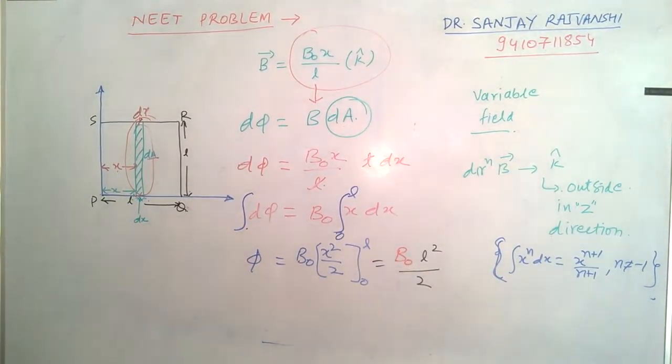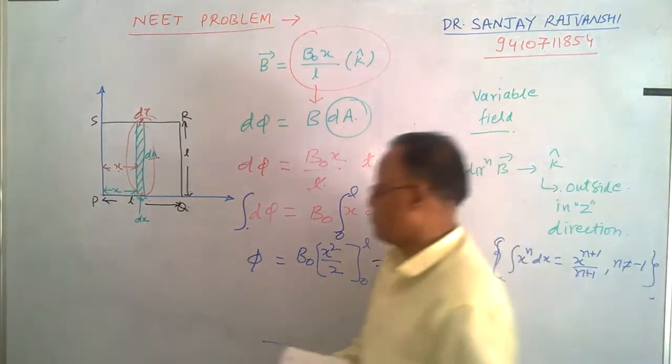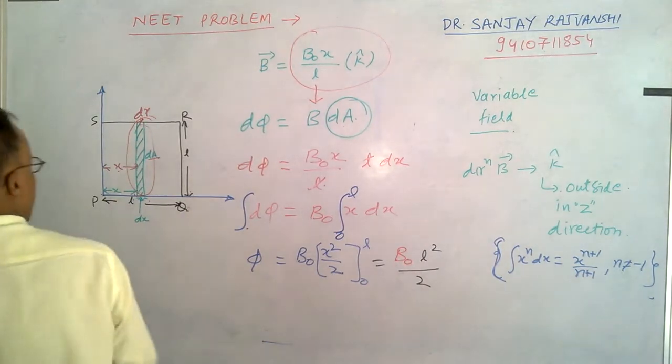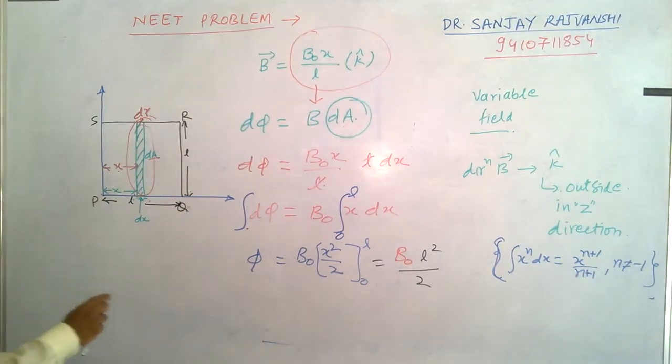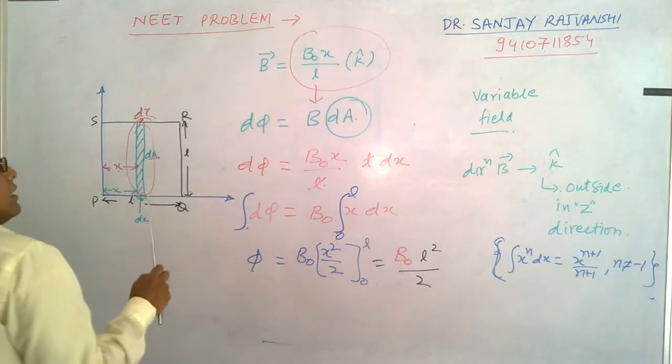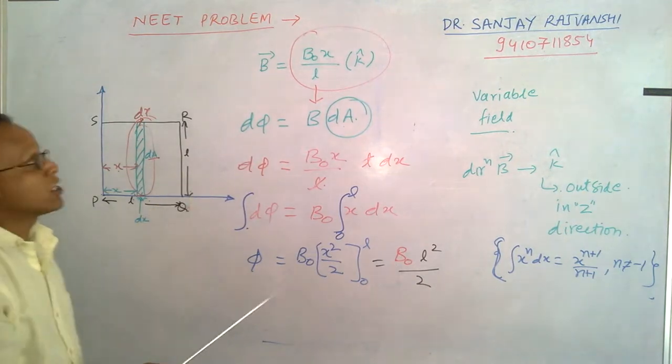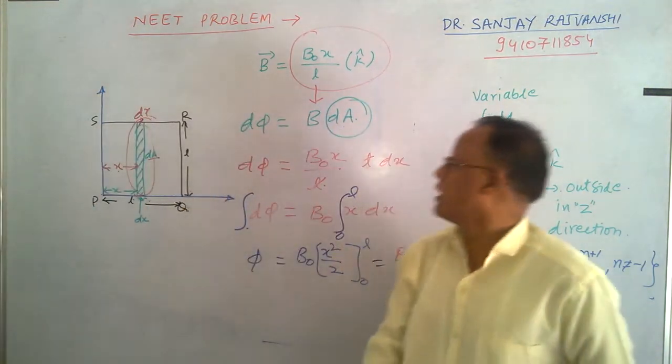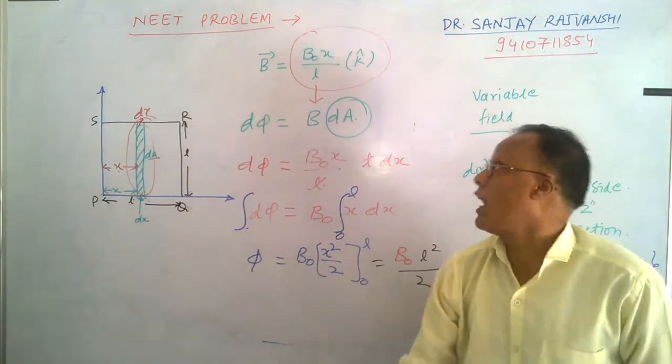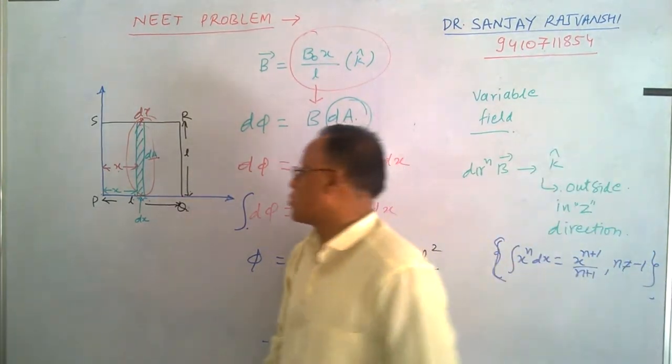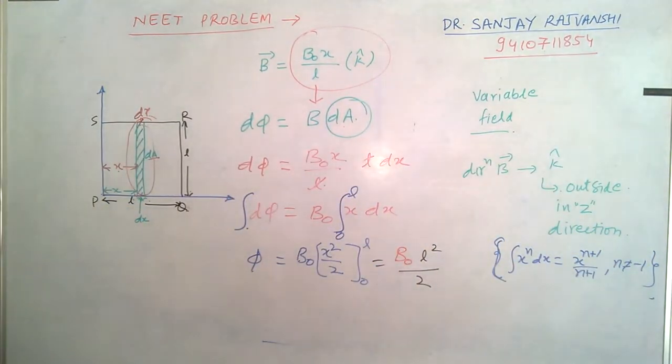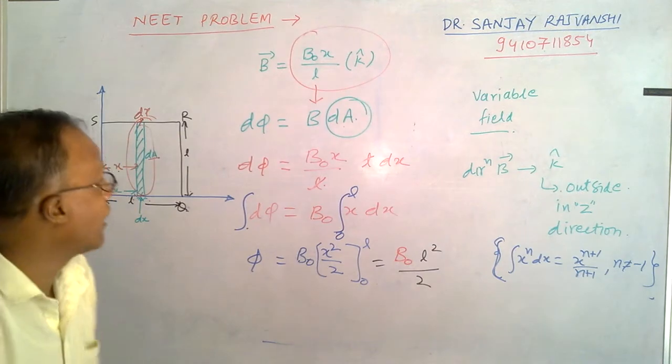Hello everyone, now a NEET problem again. Good important problem, please note down the problem. The problem is this: a square loop PQRS is kept in a field. The value of field is given B equals B naught x upon L k cap. Calculate the flux. We have to calculate flux.